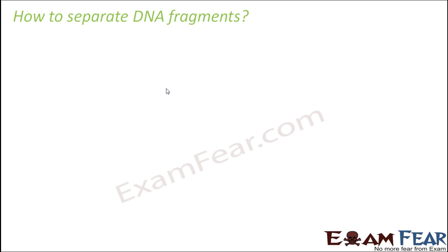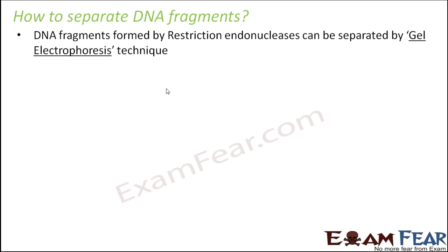Now we will try to understand how do we separate the DNA fragments. There will be so many fragments. First we have to separate them, then those DNA fragments should be visible to us so that we are able to select from them. DNA fragments formed by restriction endonucleases can be separated by a technique called gel electrophoresis.